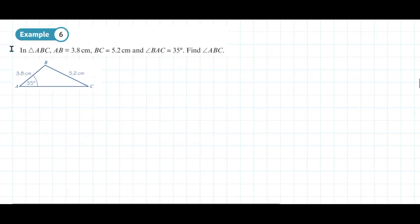This is example 6 from page 180 of the E1 textbook. In triangle ABC, AB is 3.8 cm, BC equals 5.2 cm, and angle BAC is 35 degrees. Find angle ABC, which is this angle here at the top.